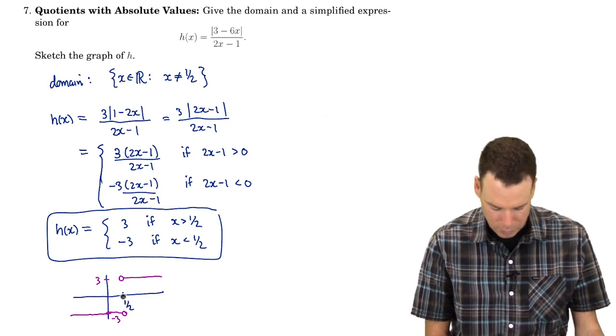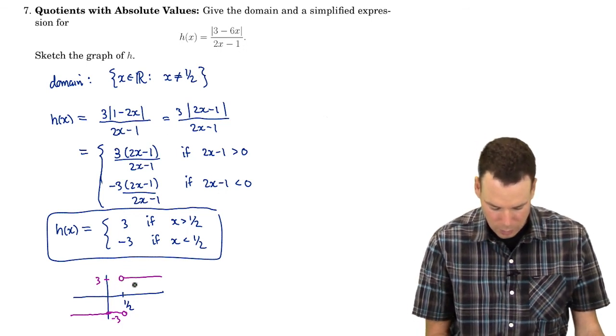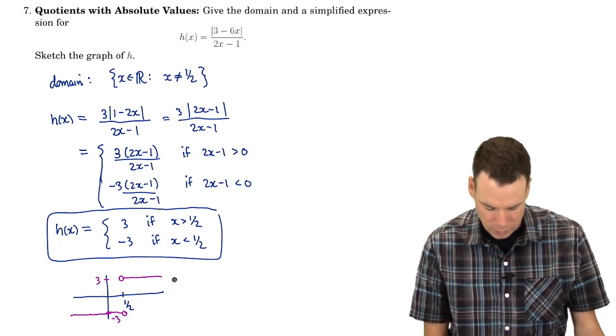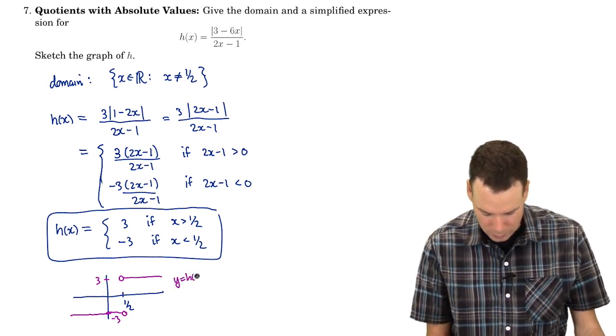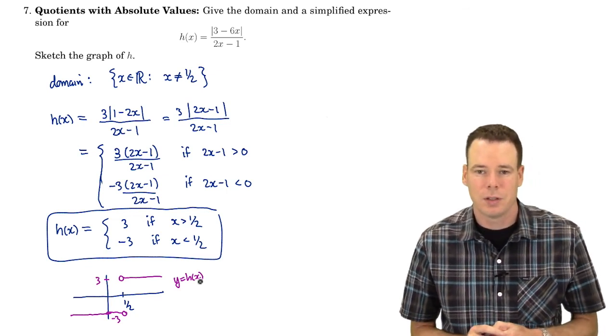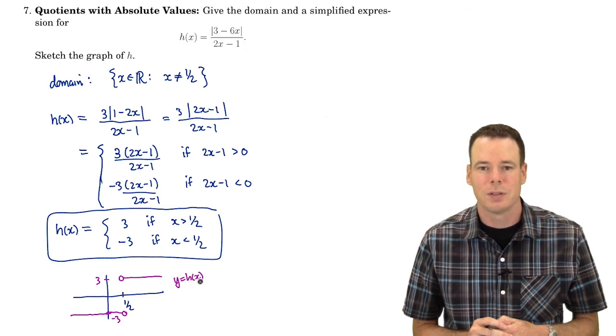And I've used open dots here because the function is not defined at a half. A half is not in its domain. So I can't plug a half in but every other value is and the function either takes on the value 3 or negative 3 depending on which side of a half the x value is on. Alright so that's it for this section. Thanks very much for watching and we will see you again next time.